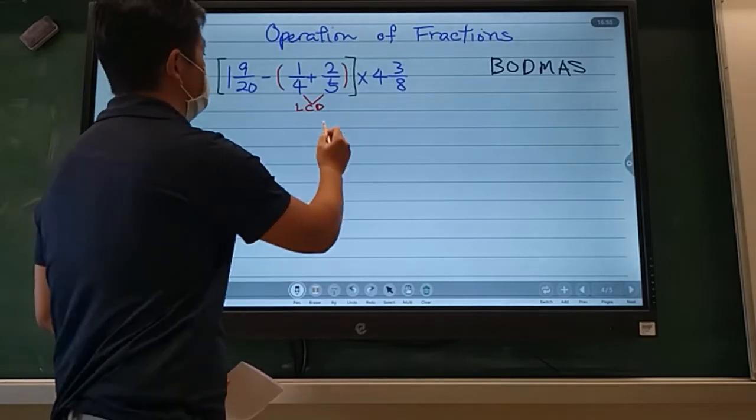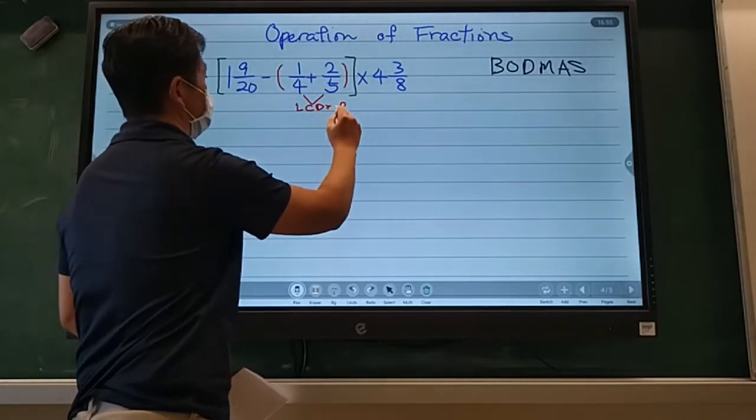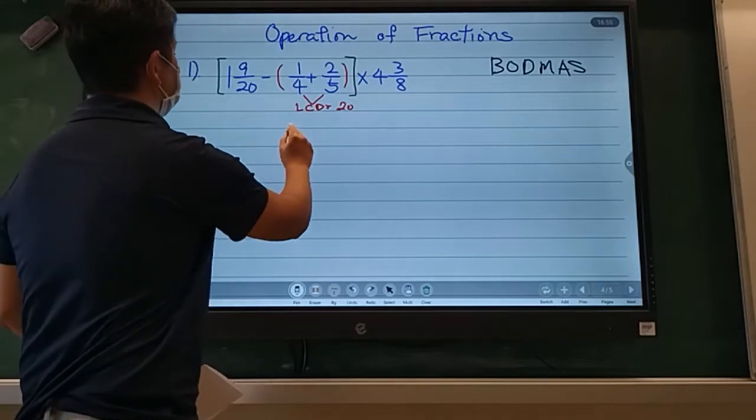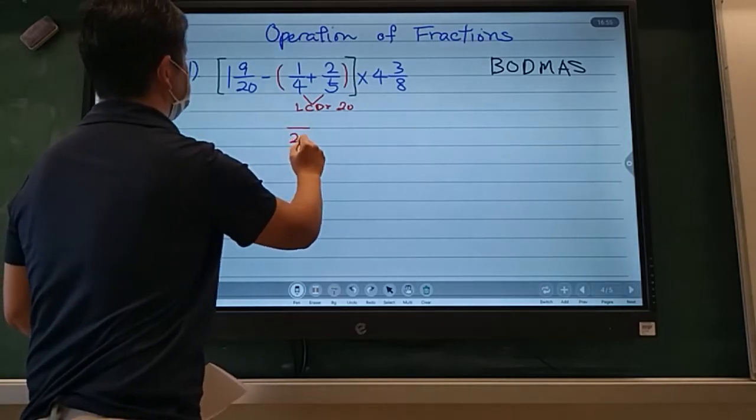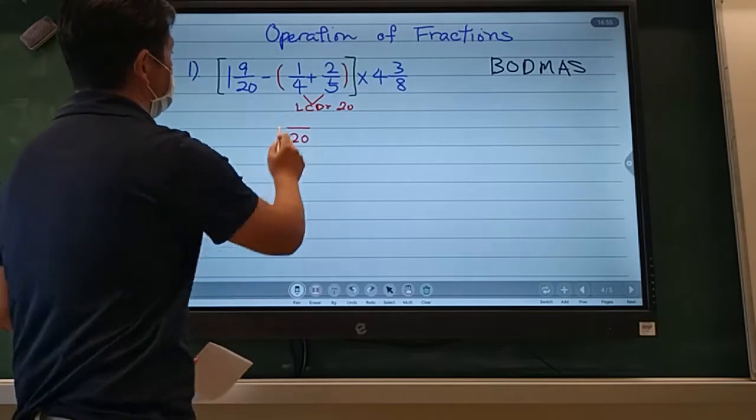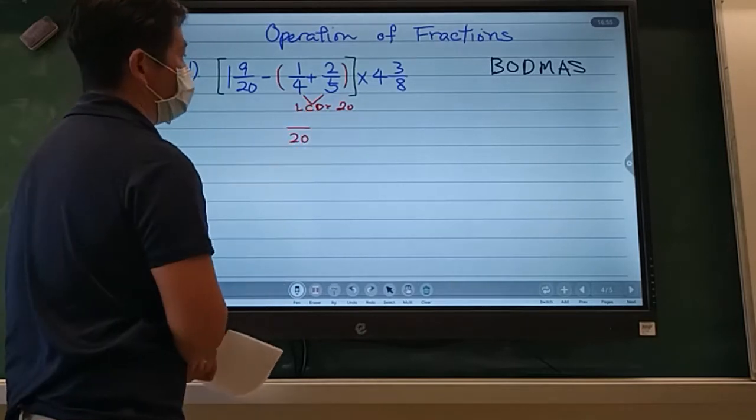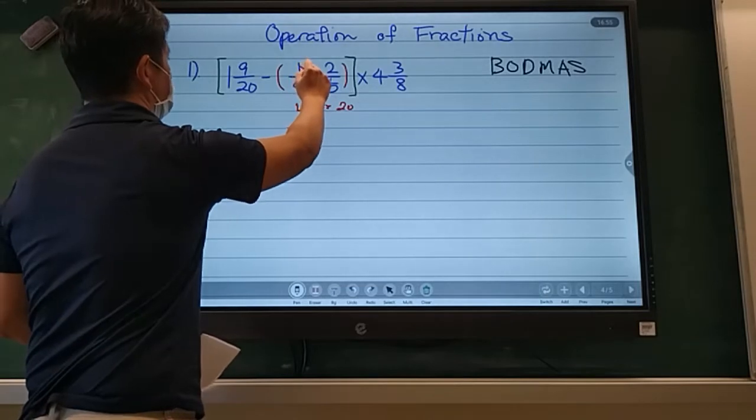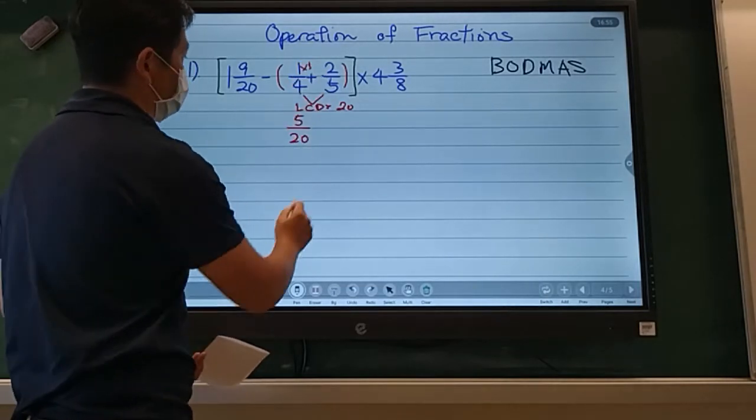So what is the lowest common denominator for four and five? When in doubt, you just multiply. So that would be twenty. So if I want to change the fraction into twenty, I would have both twenty. So four times what equals twenty? I would say it's times five. So times five, which equals five.